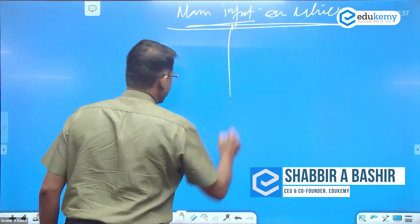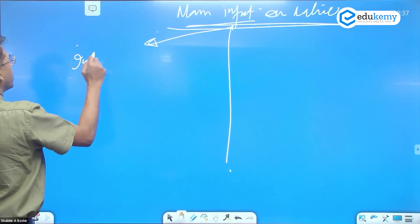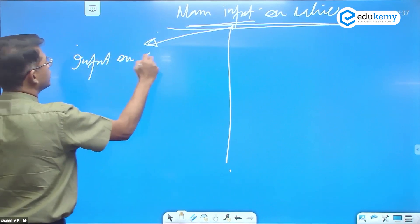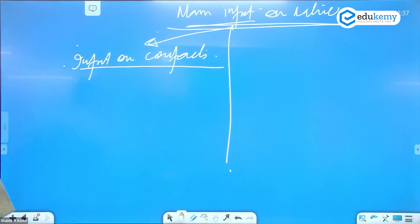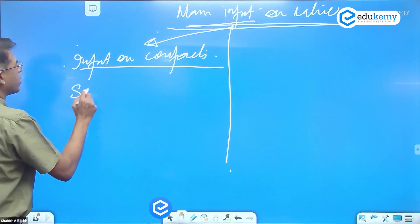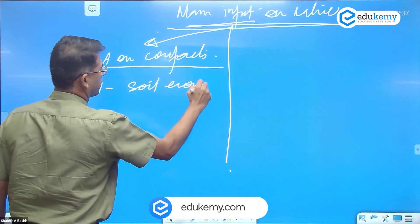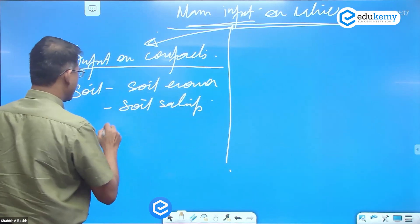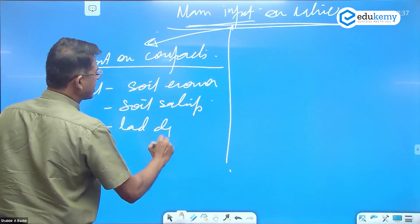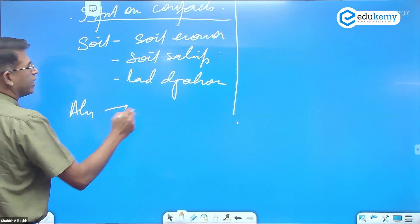We talk in terms of impact on environmental components. First, studying impacts on soil components: soil erosion, soil salinity, land degradation. For the atmosphere component, it is increase of greenhouse gases, atmospheric pollution, and climate change.